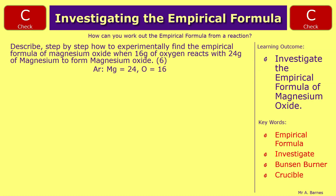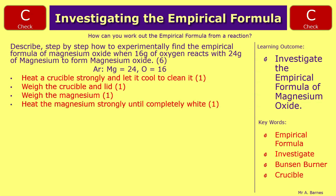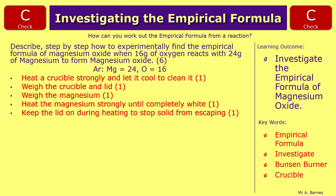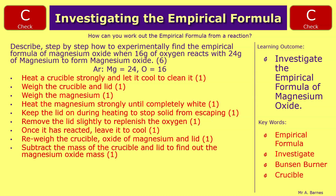Right, let's see how you've done. There are loads of ways you could have got the marks. First: heat the crucible strongly and let it cool to clean it. Second: weigh the crucible and lid beforehand, then weigh the magnesium ribbon, then heat the magnesium strongly until completely white — inside the crucible, keeping the lid on to stop the solid from escaping. Remove the lid slightly to replenish oxygen. Once reacted, leave it to cool, then re-weigh the crucible with the magnesium oxide and lid, and subtract the mass of the crucible and lid to find the magnesium oxide mass.